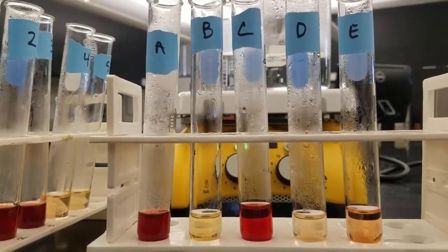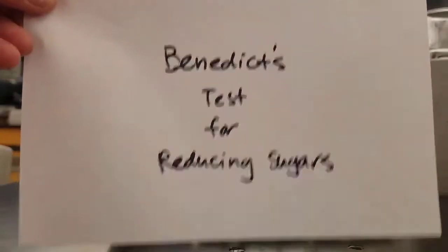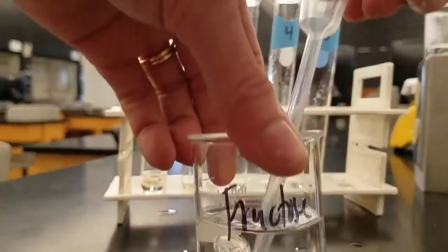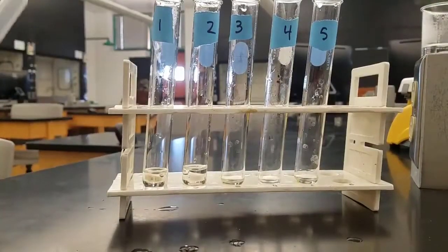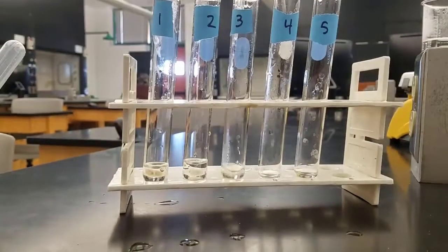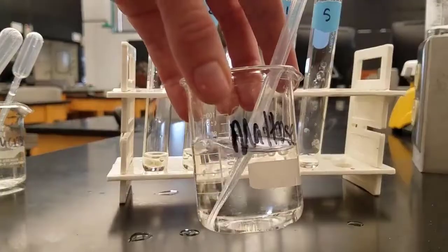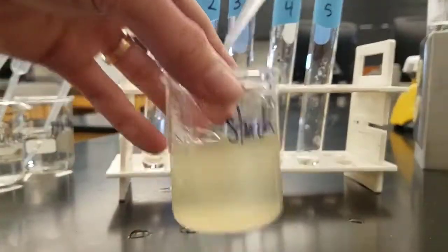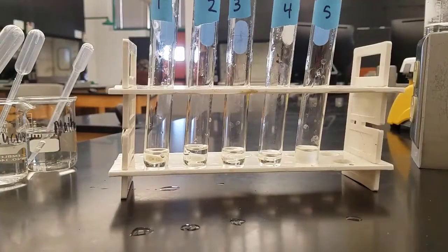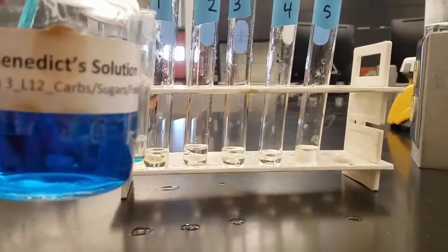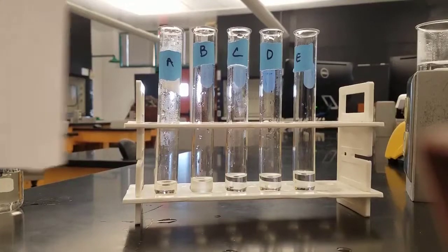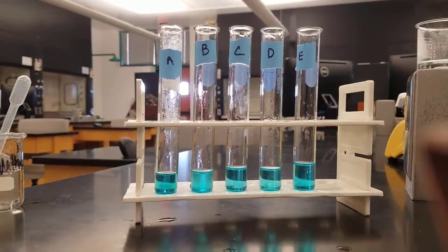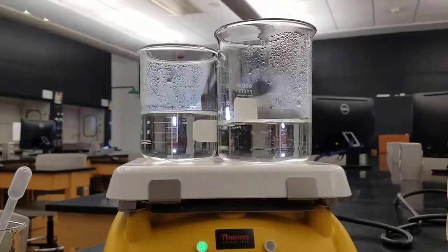Now we're going to do Benedict's test for reducing sugars. Reducing sugars are sugars that can be oxidized — most often those with a free aldehyde group. We're adding the same sugars: sucrose in number 3, maltose in number 4 (maltose is just two glucoses connected). We add one milliliter of Benedict's solution to each known and unknown. The blue color is not a positive test — it's just from the copper in the Benedict's solution.